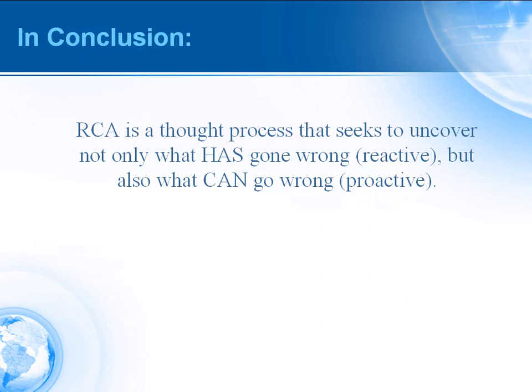In conclusion, RCA is a thought process that seeks to uncover not only what has gone wrong, but also what can go wrong. We're changing the mentality so that if we have a high-risk event — for instance, one that comes from a failure modes and effects analysis — we treat that high-risk event as if it has materialized and start our logic tree with that undesirable outcome. Then we use the same mechanism to hypothesize backwards as to how that event could have occurred, uncovering all possibilities that could line up for that undesirable outcome to materialize. Once we know these causes, we can implement recommendations to ensure systems are put in place so they can't happen.